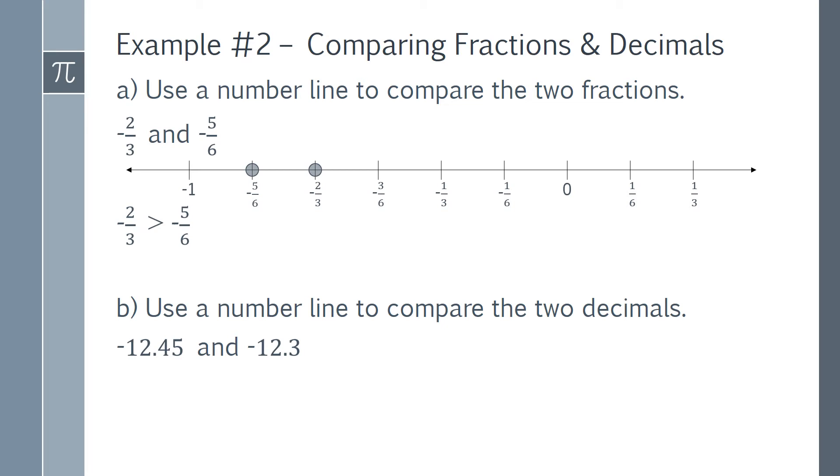Part B. Use a number line to compare the two decimals. Negative 12.45 and negative 12.3. Draw your number line, and then plot the two points.